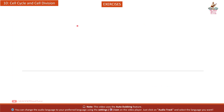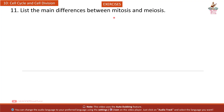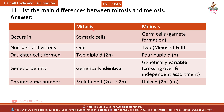Question 11: List the main differences between mitosis and meiosis. Mitosis occurs in somatic cells; meiosis occurs in germ cells for gamete formation. Mitosis: 1 division, 2 diploid daughter cells, genetically identical, chromosome number maintained 2N to 2N. Meiosis: 2 divisions (meiosis 1 and 2), 4 haploid daughter cells, genetically variable due to crossing over and independent assortment, chromosome number halved 2N to N.